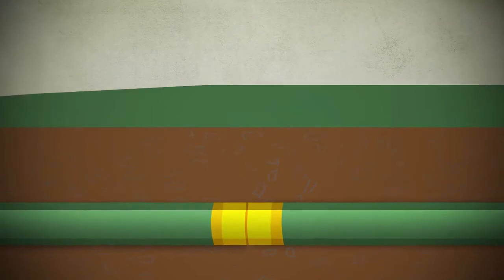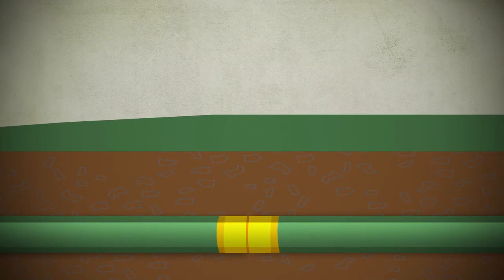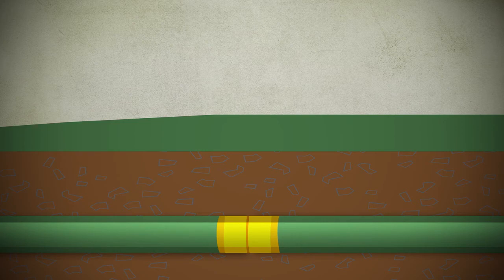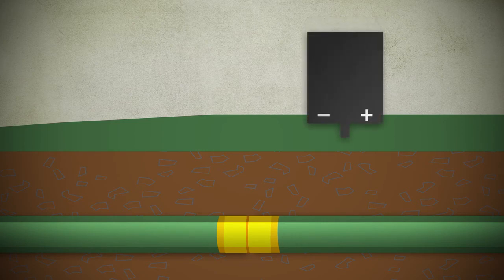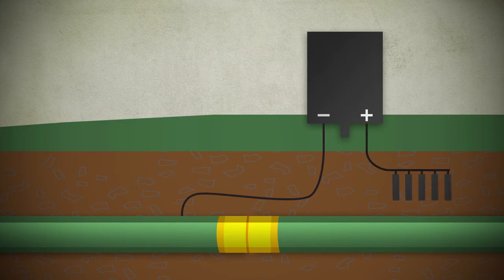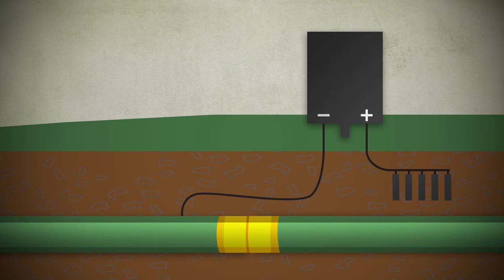And if the coating is damaged during construction, a backup called cathodic protection is also in place to protect the length of the pipe. It uses electric current to divert corrosion onto a series of metal anodes buried close to the pipe. The anodes are then replaced every 10 to 20 years depending on their condition.